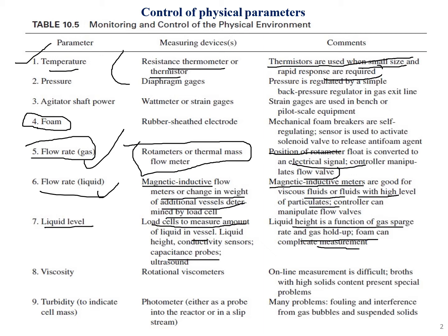The eighth point is viscosity. It is measured with the help of rotational viscometers. Online measurement is difficult, and broths with high solid content present special problems.